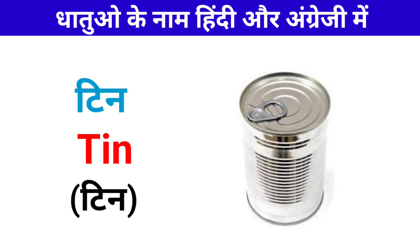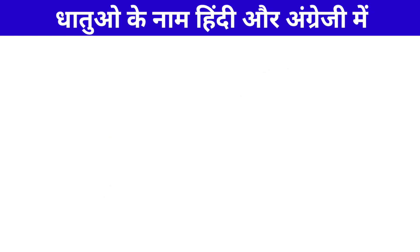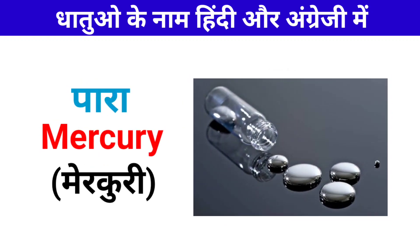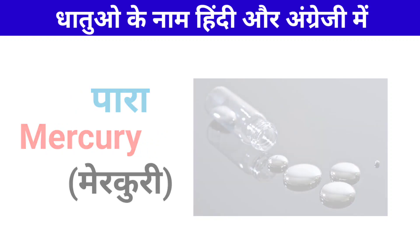Teen — Teen ko English me Tin kaha jata hai: Tin. Parah — Parah ko English me Mercury kaha jata hai: Mercury.